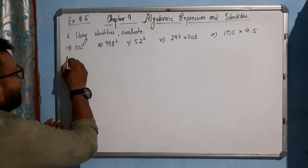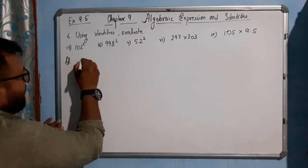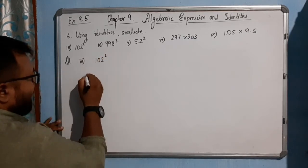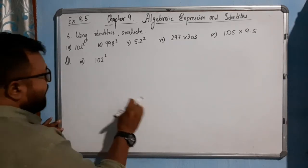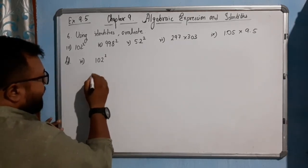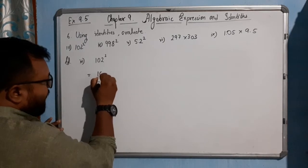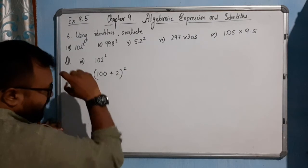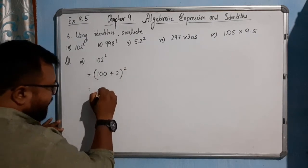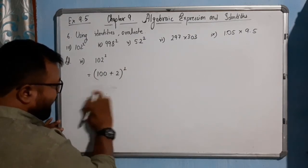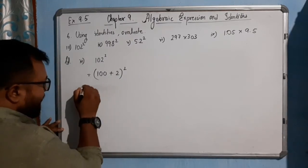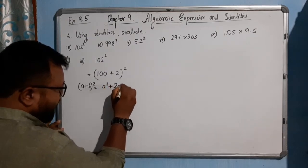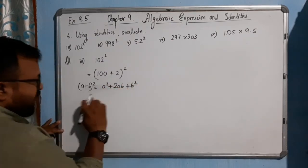Let's do the solution. Third is 102 square. It can be written as 100 plus 2 whole square. So a plus b whole square means a square. We will use this identity a plus b whole square equals a square plus twice ab plus b square.